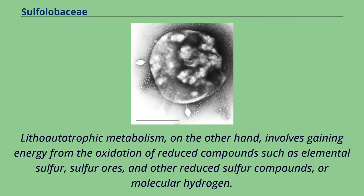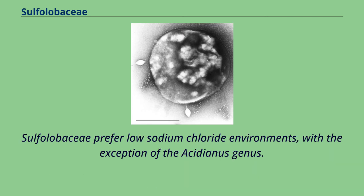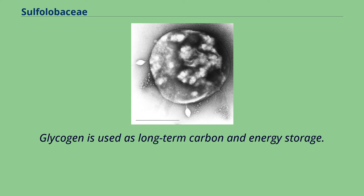Lithoautotrophic metabolism, on the other hand, involves gaining energy from the oxidation of reduced compounds such as elemental sulfur, sulfur ores, and other reduced sulfur compounds, or molecular hydrogen. Sulpholobaceae prefer low-sodium chloride environments, with the exception of the Acidianus genus. Glycogen is used as long-term carbon and energy storage.